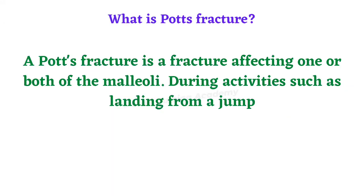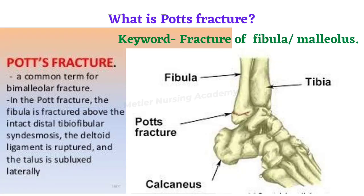Pott's fracture is a fracture affecting one or both of the fibular malleoli. It occurs during activities such as landing from a parachute jump — landing very forcefully on the ground causes damage to the malleoli part of the fibula. This type of fracture is called Pott's fracture.